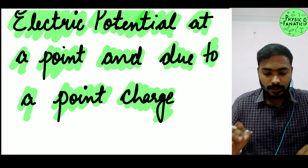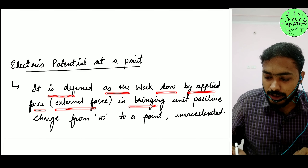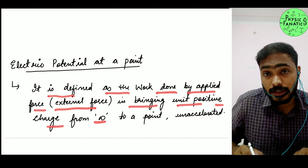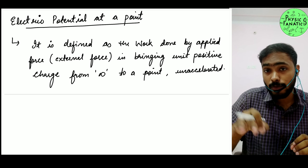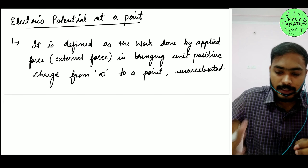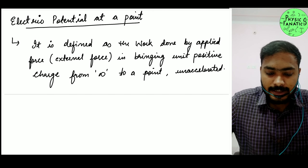We'll talk about electric potential — how we can find out electric potential at a point, and electric potential due to a point charge. First, we have to talk about how we can define electric potential at a point. According to the convention definition, it is defined as the work done by the applied force or external force in bringing a unit positive charge from infinity to a point, unaccelerated.